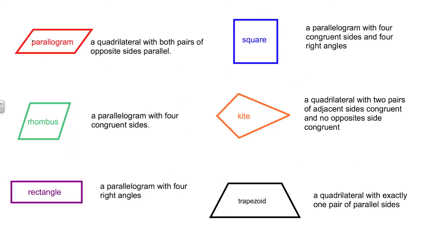The first here in red is a parallelogram. A parallelogram is defined as a quadrilateral with both pairs of opposite sides parallel. That would be sides across from each other are parallel, which means they would never intersect. The top and the bottom side will never cross, and the left and the right hand side will never cross.